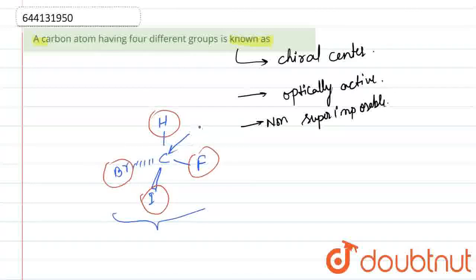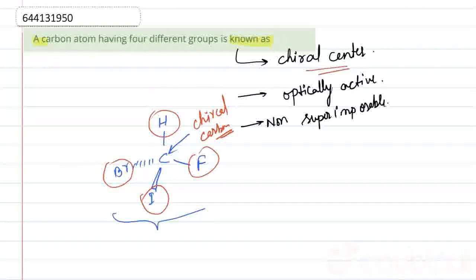So this carbon is known as chiral carbon. We can say that a carbon having four different groups is known as chiral carbon. This is our required answer. Thank you.